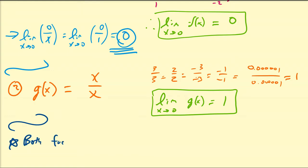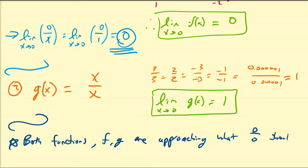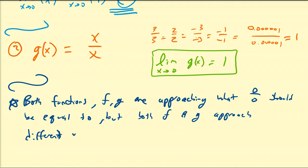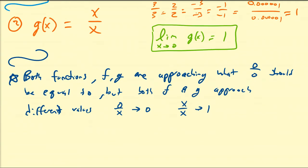Both functions f and g are approaching what zero divided by zero should be equal to. Since we're trying to define zero divided by zero to be a fixed number that everyone will accept and use in other rules, we should be able to fix it to one of them — but both f and g approach different values. Zero divided by x is getting close to zero, while x divided by x is getting close to one. So if we want to define zero divided by zero, which one do we choose? Do we choose zero or do we choose one?